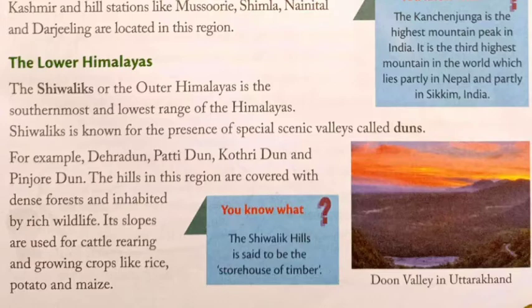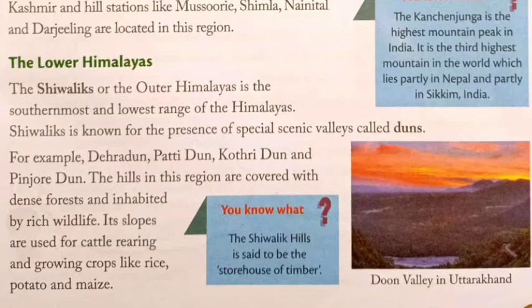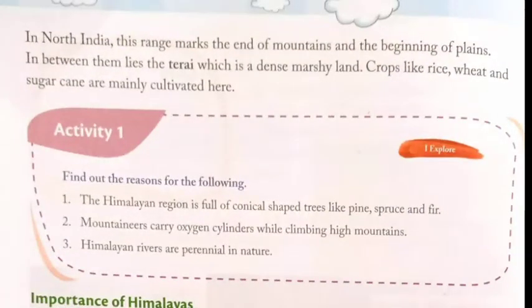The hills in this region are covered with dense forests and inhabited by rich wildlife. Its slopes are used for cattle rearing and growing crops like rice, potato and maize. Did you know? The Shivalik Hills is said to be the storehouse of timber. A picture shows the Doon Valley in Uttarakhand. In North India, this range marks the end of mountains and the beginning of plains. In between them lies the Terai, which is a dense marshy land. Crops like rice, wheat and sugarcane are mainly cultivated here.